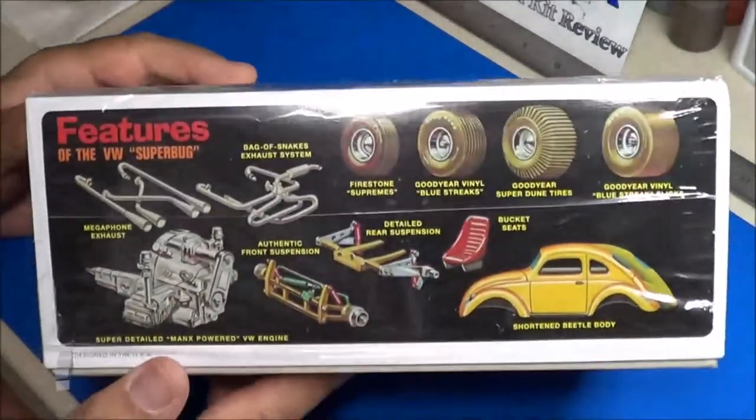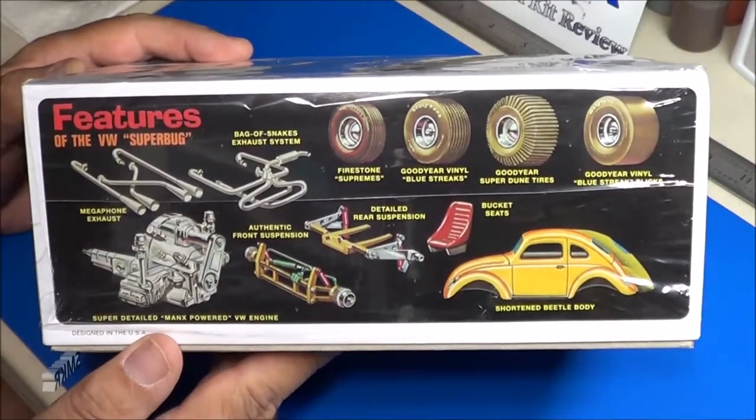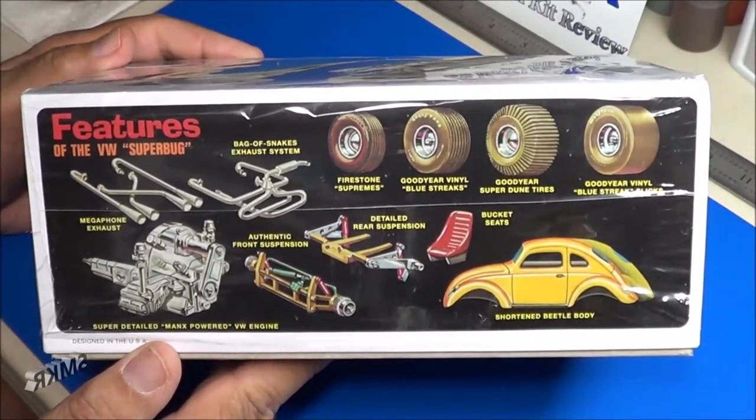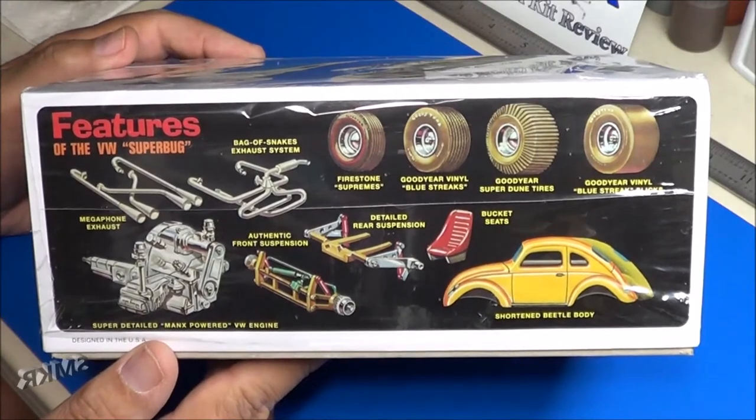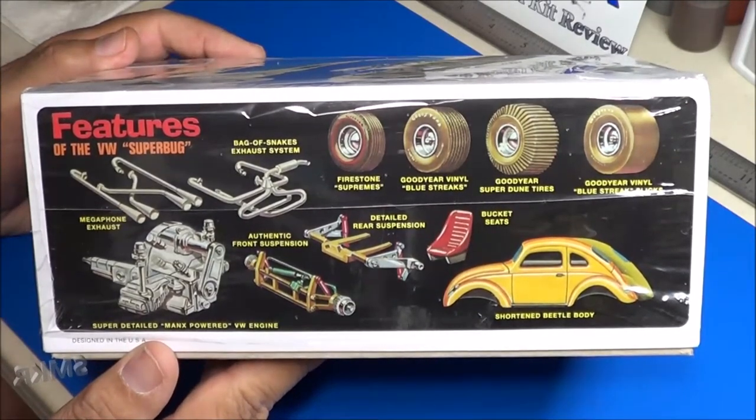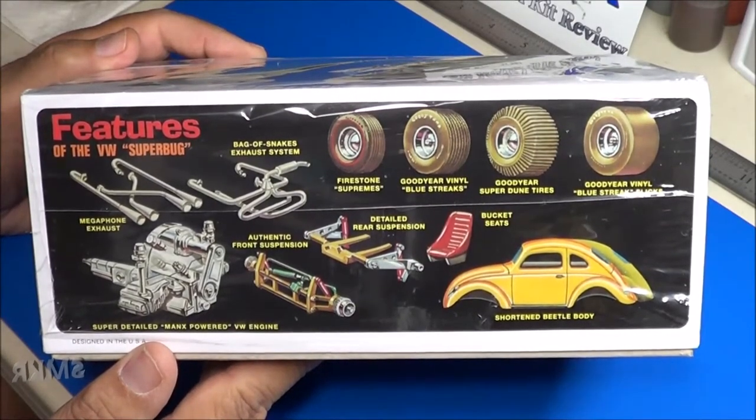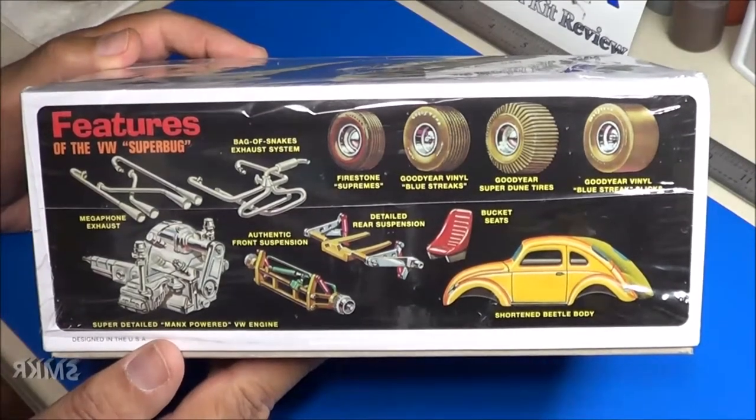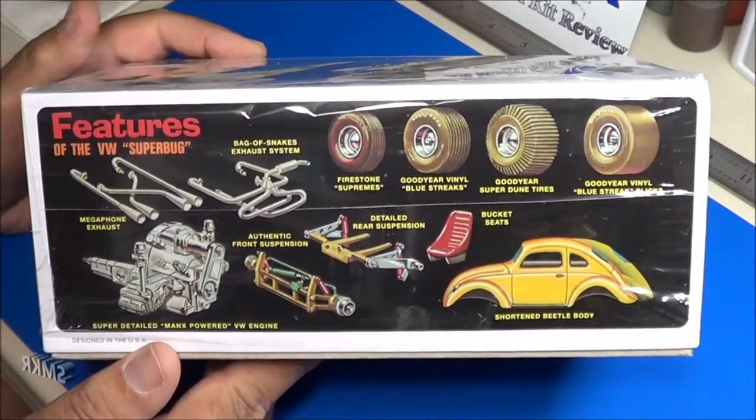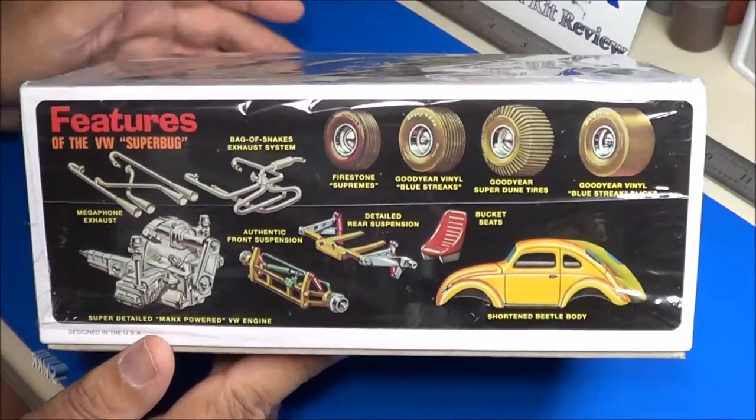And even the original art that was found on the original issue of this kit. Firestone super rims, Goodyear vinyl blue streaks. I don't think those were on the original issue, the red stripes were but not the blue streaks.